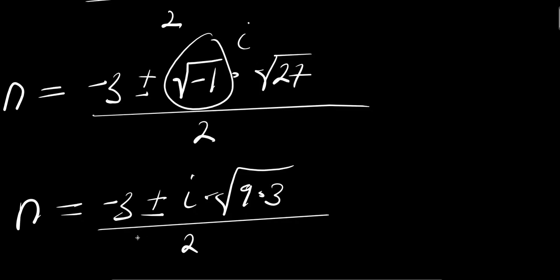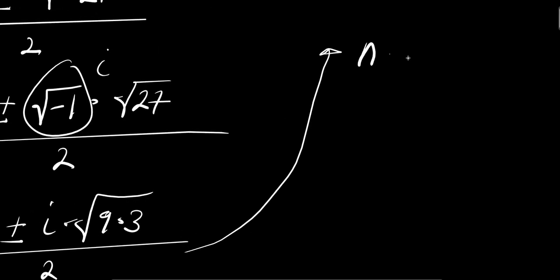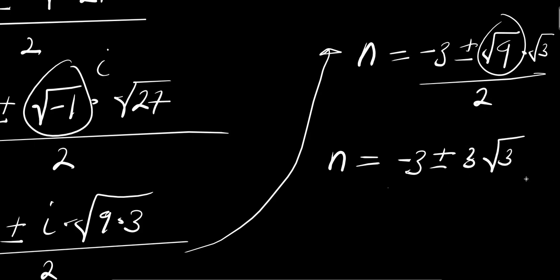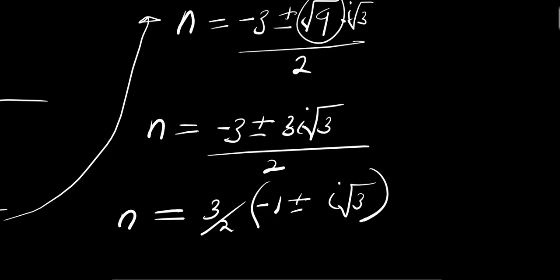So from here we have n equals negative 3 plus or minus i·3√3, divided by 2. Factoring out 3 over 2, we get n equals 3 over 2 times (negative 1 plus or minus i√3). So we have 2 complex values for n: 3 over 2 of (negative 1 plus i√3), and 3 over 2 of (negative 1 minus i√3).